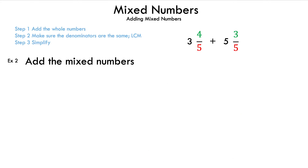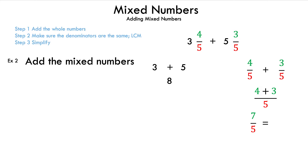Now let's take a look at example 2. We have 3 and 4/5 plus 5 and 3/5. Let's go ahead and add the whole numbers 3 and 5, and the result is 8. Write down our fractions: 4/5 and 3/5. Since we already have a common denominator, we add the numerators 4 and 3, and the result is 7/5. Since we have an improper fraction, we need to write a mixed number so we can combine it with 8 to have one number.